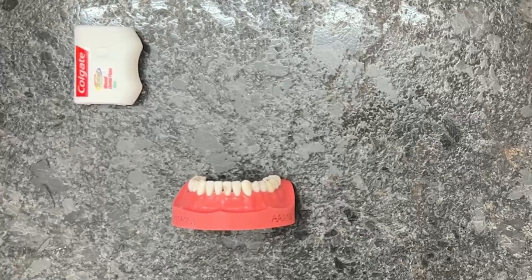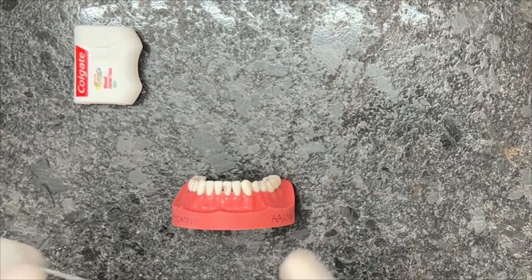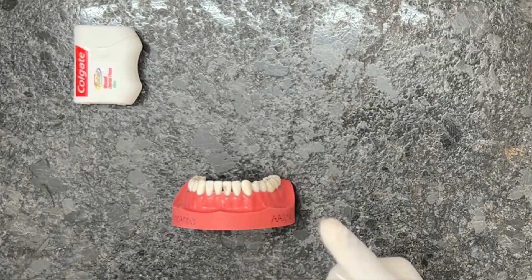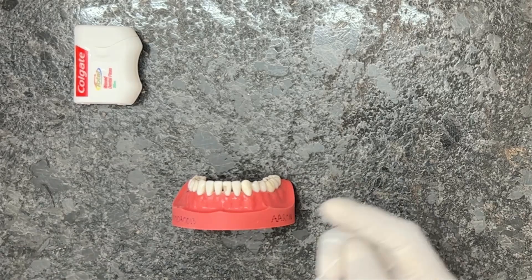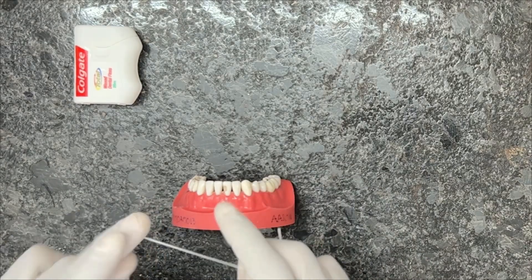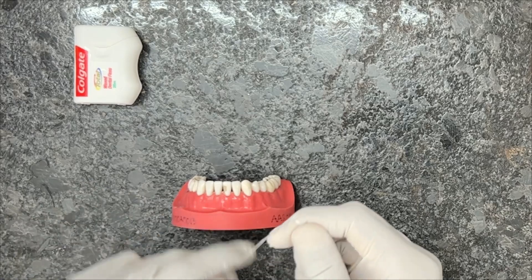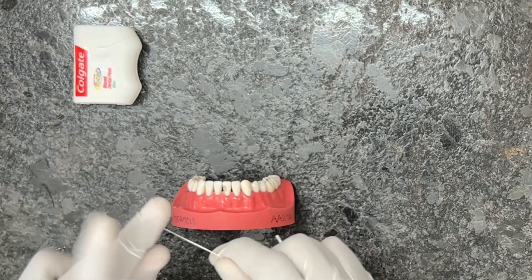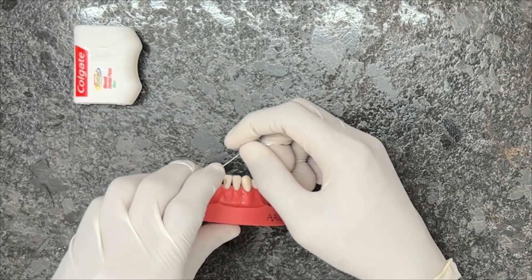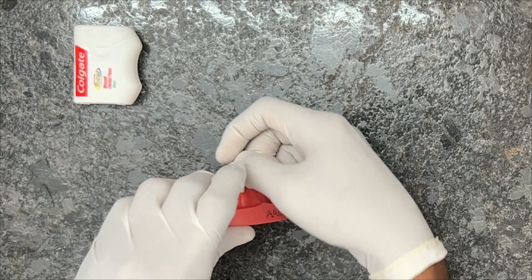To use the floss, take about 18 to 20 inches and wrap it around your fingers, leaving about 2 inches of working length between them.